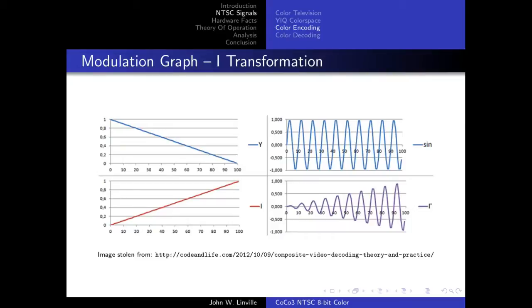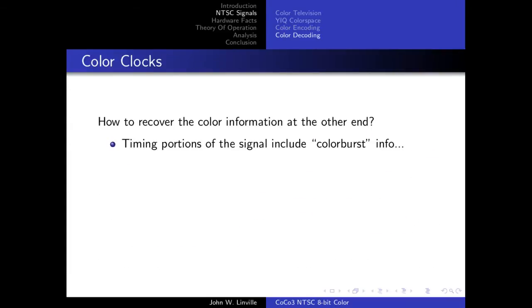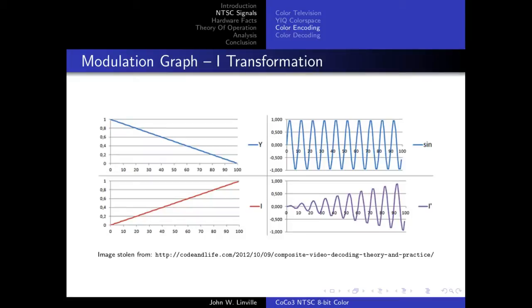I've borrowed an image from the URL shown to illustrate the encoding. Imagine the Y signal shown on the left — that's where you start. On the top right you have a sine wave, and the I signal shown at the bottom left is going up and to the right. You multiply that times the sine wave and get something that looks like a trumpet shape in the bottom right corner. When you add the Y signal and that modulated component together, you get something like the purple signal shown, and averaging that out gives you back something reminiscent of the original Y signal.